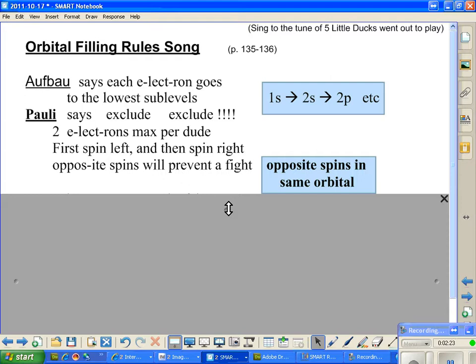Two electrons max per dude. First spin left, and then spin right. Opposite spins will prevent a fight. And when we say opposite spins, we've got opposite spins in the same orbital. So we're going to see a dramatic demonstration of two magnets that will serve to show you what the electrons do when the spins do not match.